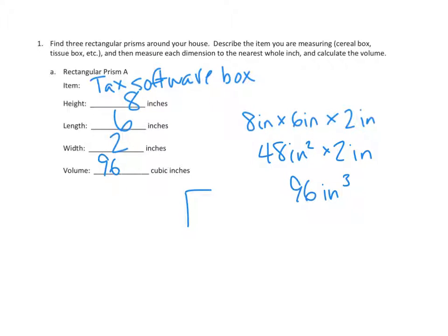So I'll just tell you what that looks like. That looks like this, and then it is very shallow. There's my tax software. It is eight inches high by six inches wide by two inches deep. Eight by six by two.